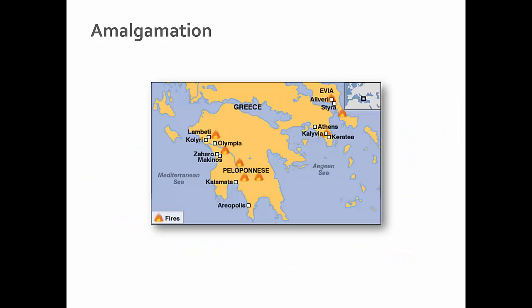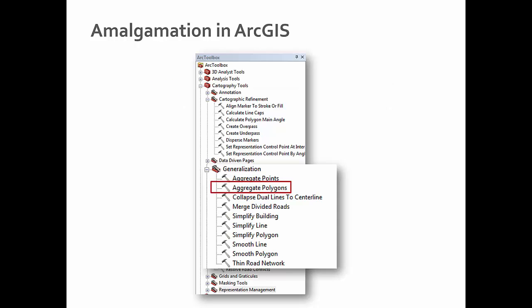Amalgamation can also be very useful for islands — for example, showing fires in Greece where the islands are amalgamated. In ArcGIS, amalgamation is typically called aggregation, and you'll see that a lot — proprietary software uses slightly different terms, like geo-referencing versus geo-rectifying, but it's the same idea. You can aggregate points and aggregate polygons.